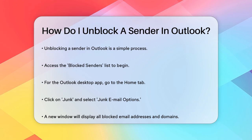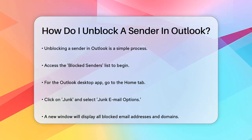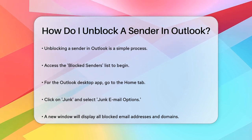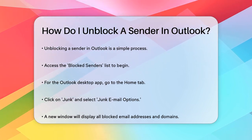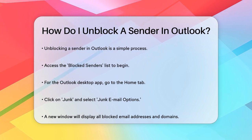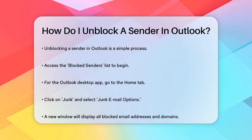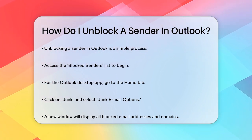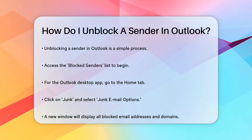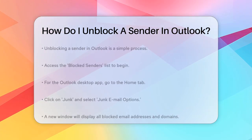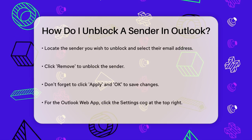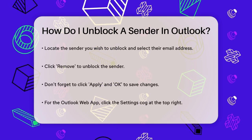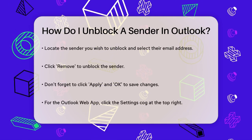First, let's start with the classic Outlook desktop app. To unblock a sender, you need to access the blocked senders list. On the Home tab, click on Junk, and then select Junk Email Options. This will open a new window where you can see all the email addresses and domains you've blocked. Find the sender you want to unblock, select their email address, and click Remove. Then click Apply and OK to save your changes.